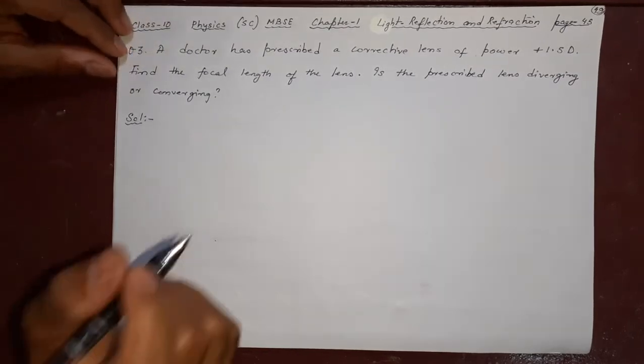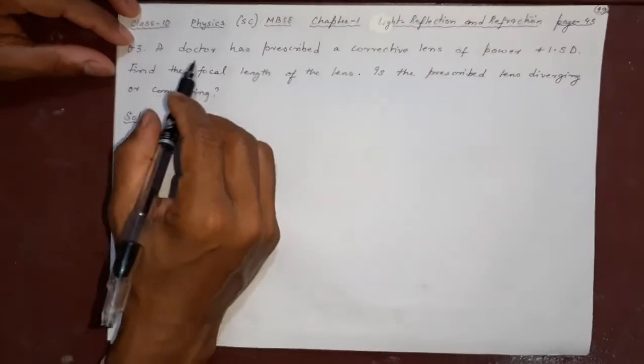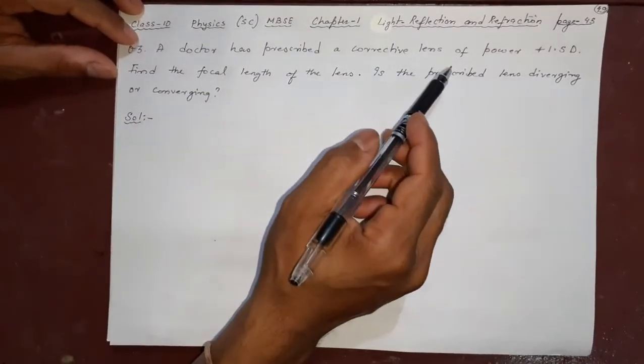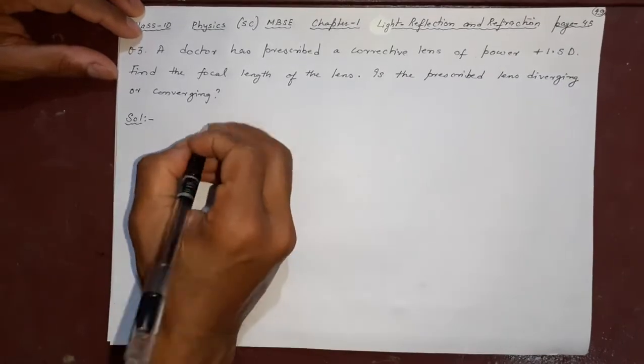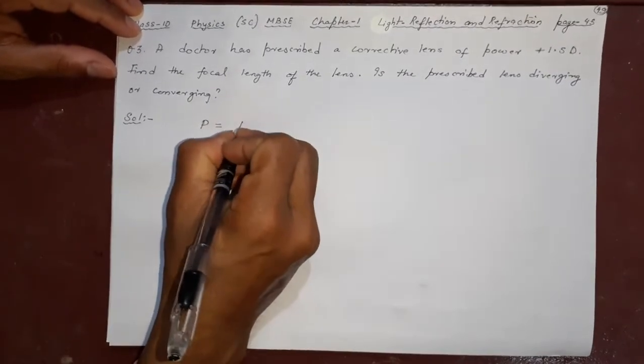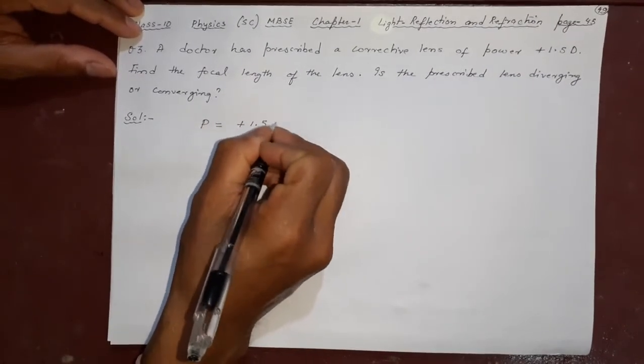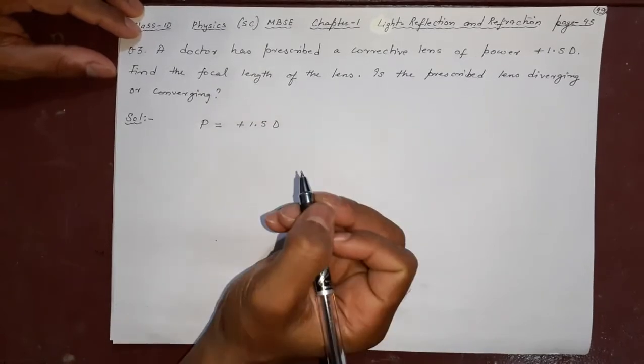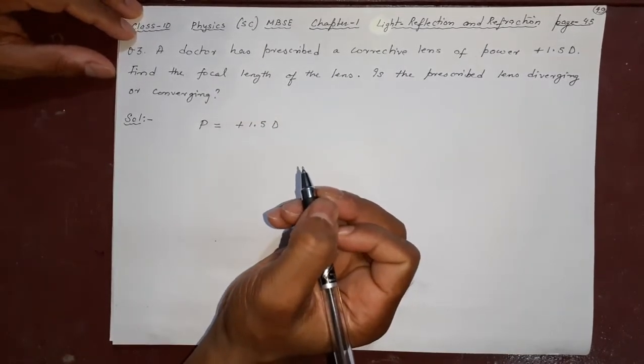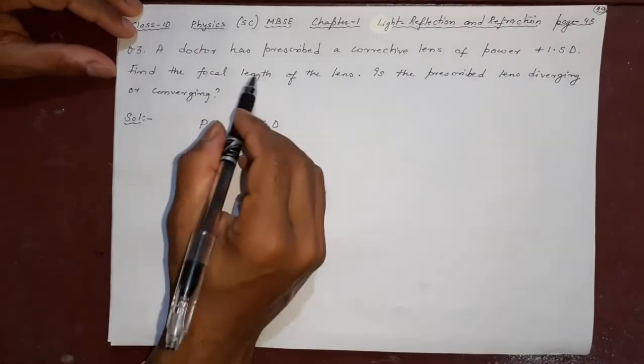The third question is like this. A doctor has prescribed a corrective lens of power plus 1.5 diopter. You should know that plus means it is a convex lens. Find the focal length of the lens.